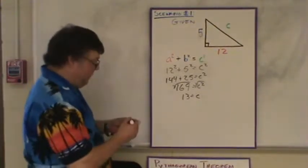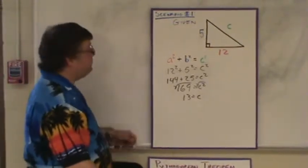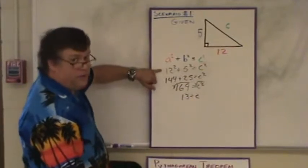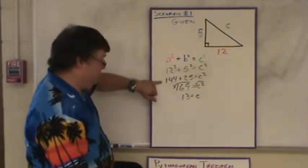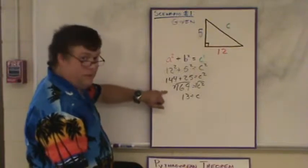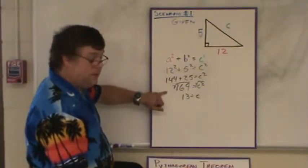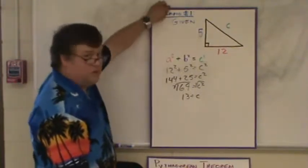So, the steps that I followed to solve scenario one was to square both numbers I'm given, add them together, and then do the square root to find the final answer. That's what you do when you're given two legs.